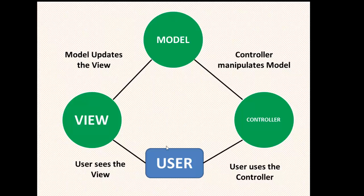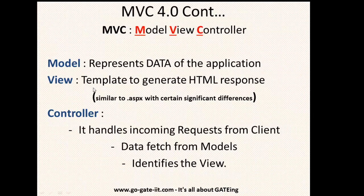From the diagram you can see this is the generic MVC architecture, showing the interdependency between all the modules. Here you can see there is model, view, and controller, and this is the user. View is nothing but the HTML page that you see on your browser — it is a template that generates the HTML response. In classic ASP, the view is similar to an .aspx control, with certain significant differences we will see later.